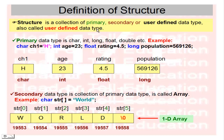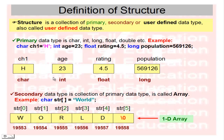First we check what is the primary data type. Primary data type in C language includes character, integer, long, float, double, etc. For example: character variable ch assigned 'h', integer variable age assigned 23, float variable ratings assigned 4.5, long variable population assigned 569126. Each variable has a different location, different name, and different type. This is the primary data type.